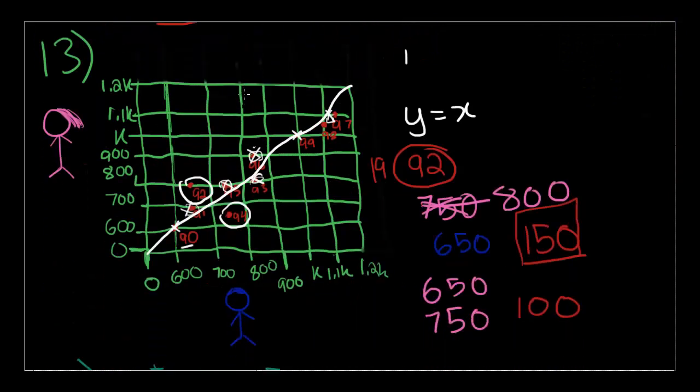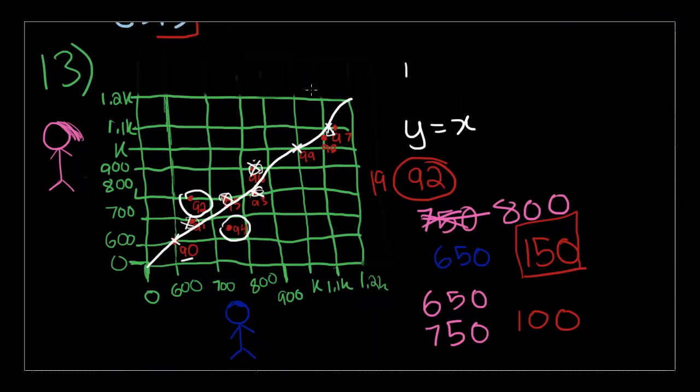Now, we'll head over to number 13, where there are girls and boys galore. The question here asks, the scatterplot above shows the number of male and female students at Central High School from 1990 to 1999, in which one of the years shown was the absolute value of the difference between the numbers of male and female students the greatest. They just want to know, in which year were there way more girls than boys or way more boys than girls.